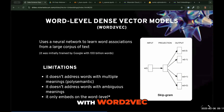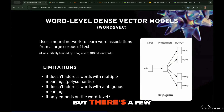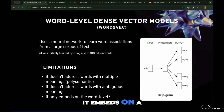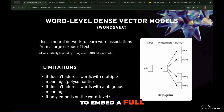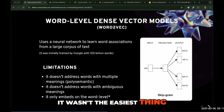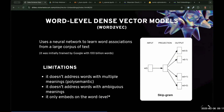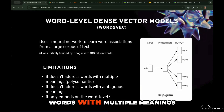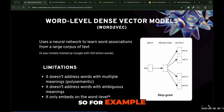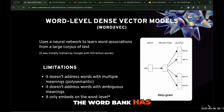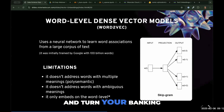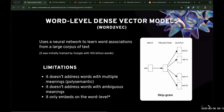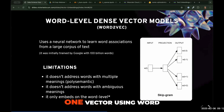There are a few problems with Word2vec. It embeds on a word level — if you wanted to embed a full sentence, it wasn't straightforward; you'd have to do some vector combination things. It also doesn't address words with multiple meanings. For example, the word 'bank' has multiple meanings: it can be where you put your money, the side of a river, or a verb like banking in a turn. Bank would just have one vector using Word2vec.